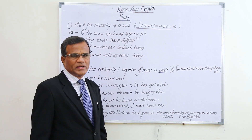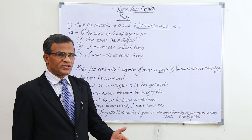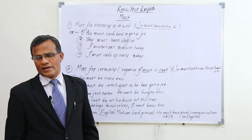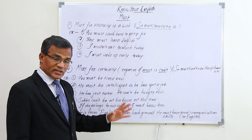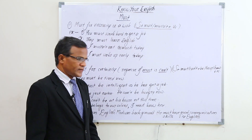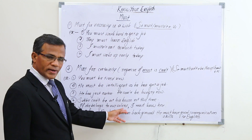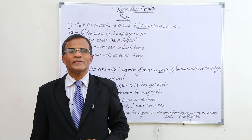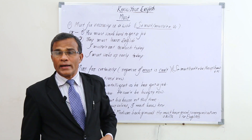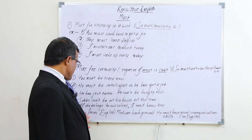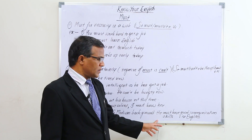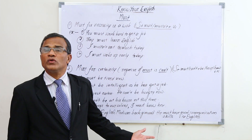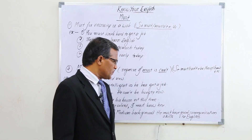'Subhu can't be at his house at this time' — his regular time is fixed, so it is certain he is out. 'If she belongs to our colony, I must know her' — it is certain that I know her. 'If he is from an English medium background, he must have good communication skills in English.'